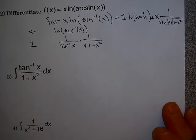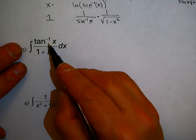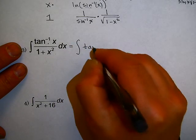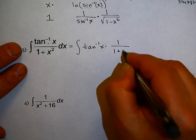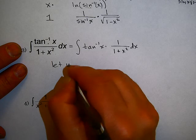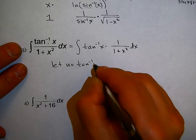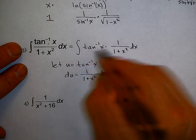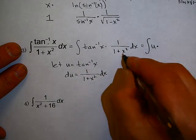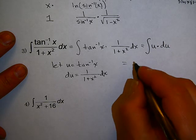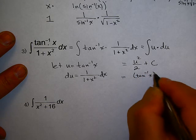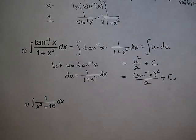Let's do some integration. This integral looks awful, but notice the derivative of inverse tangent is 1/(1 + x²). So I can think of the integrand as inverse tangent of x times 1/(1 + x²). I'll let u equal inverse tangent of x, then du equals 1/(1 + x²) dx. The integral becomes ∫u du, which equals u²/2 + C. So the final answer is (inverse tangent of x)²/2 + C. That's simple u-substitution.